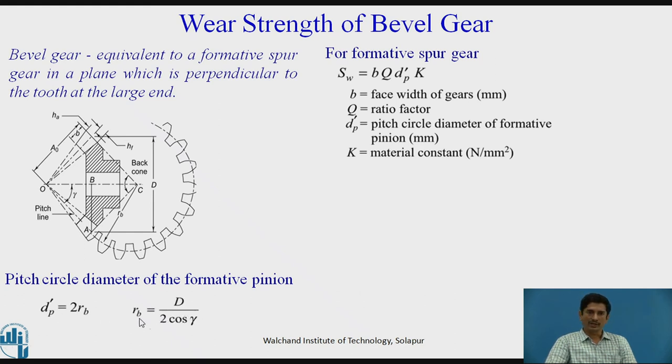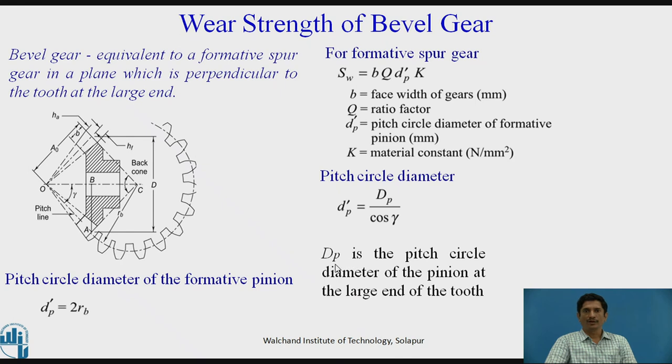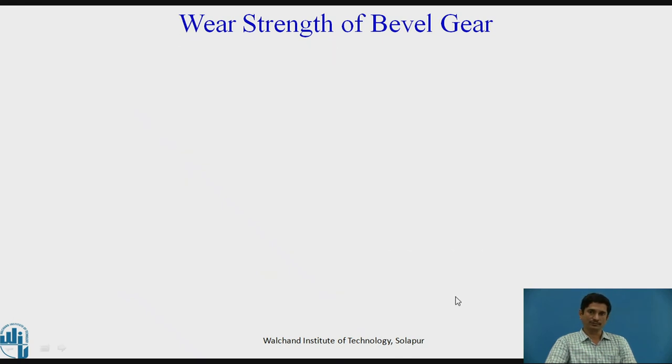Pitch circle diameter of the formative pinion is given as DP dash equals 2RB, or we know that RB equals D upon 2 cos gamma. Using these equations, DP dash equals DP upon cos gamma, where DP is the pitch circle diameter of the pinion at the large end of the tooth. The wear strength hence is given by SW equals BQ DPK upon cos gamma.